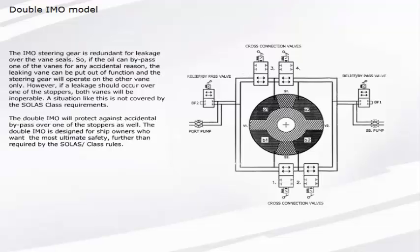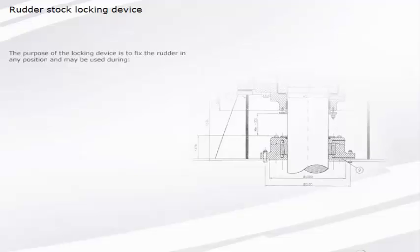The purpose of the locking device is to fix the rudder in any position and may be used during maintenance of steering gear, anchoring, or towing.